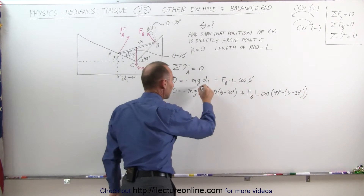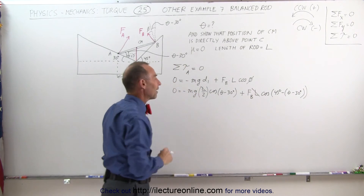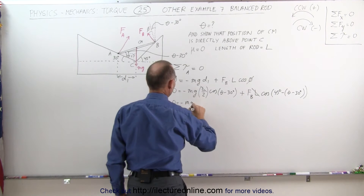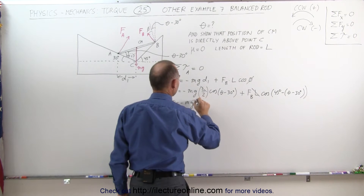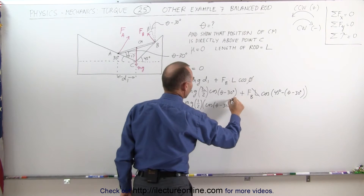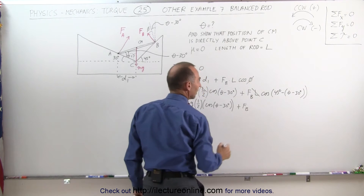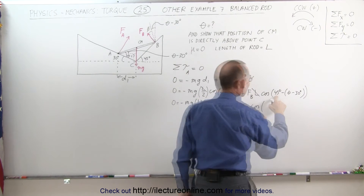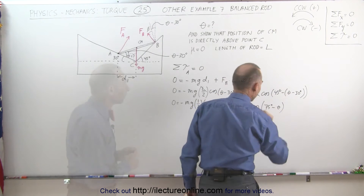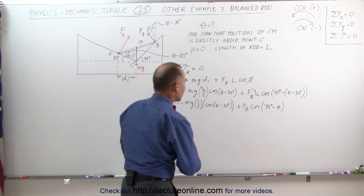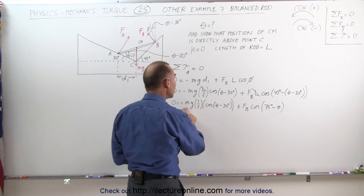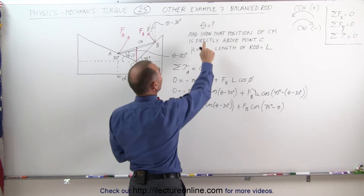Simplifying by noting we have an L in both terms and the equation equals zero, we divide both sides by L. Then, to solve for theta, we need to get rid of F sub B — we need to find F sub B in terms of mg, which will allow us to cancel mg and solve for the angle theta.